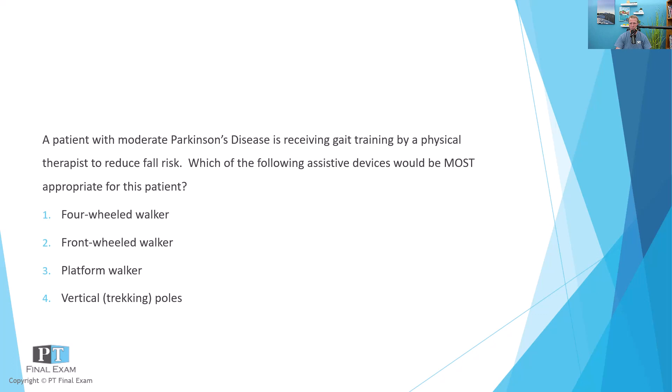Number one: four-wheeled walker. Number two: front-wheeled walker. Number three: platform walker. Number four: vertical or trekking poles. So we've got one, four-wheeled walker; two, front-wheeled walker; three, platform walker; and four, vertical or trekking poles.